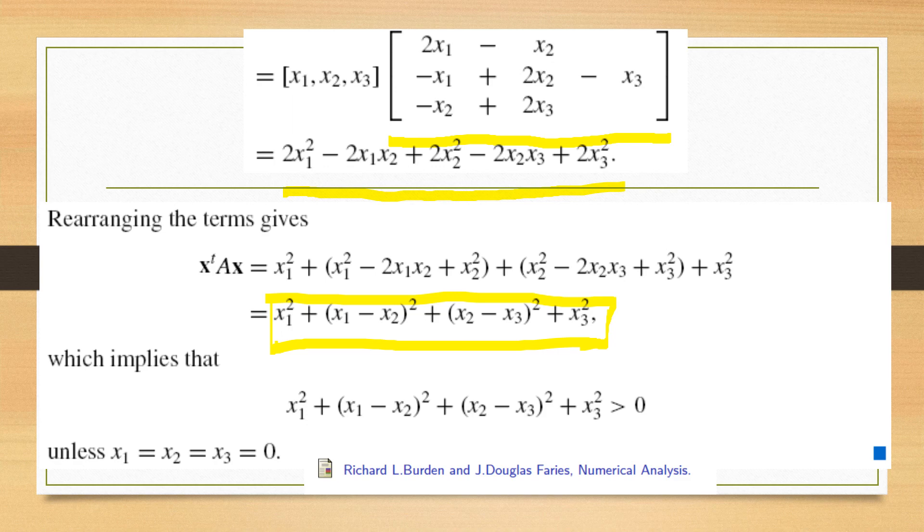Unless x1, x2, x3 are all equal to zero. Hence we conclude that the matrix is positive definite.